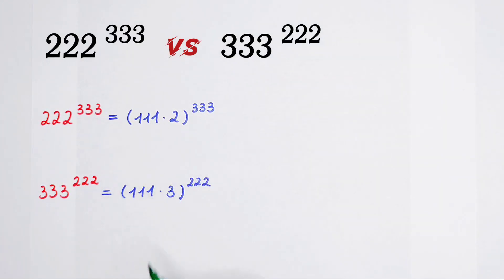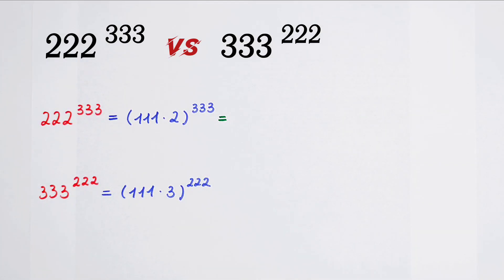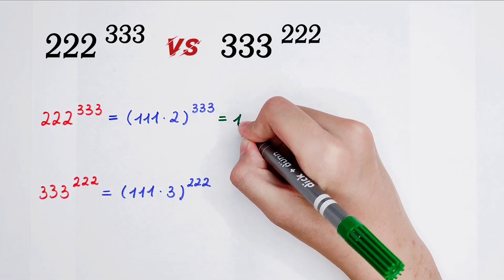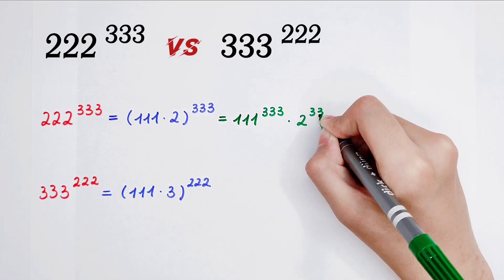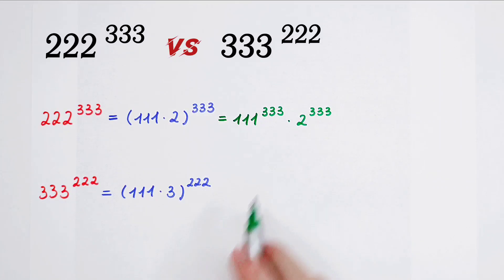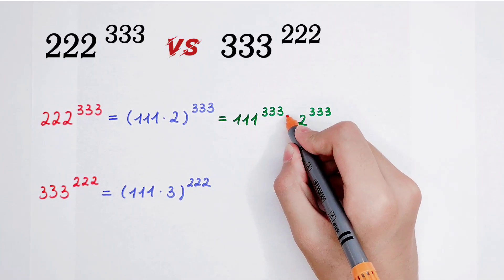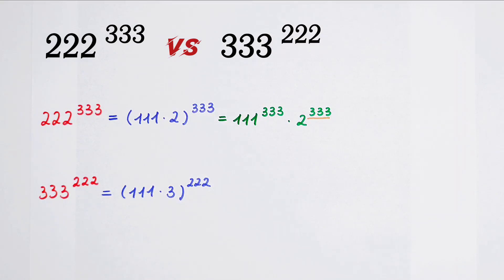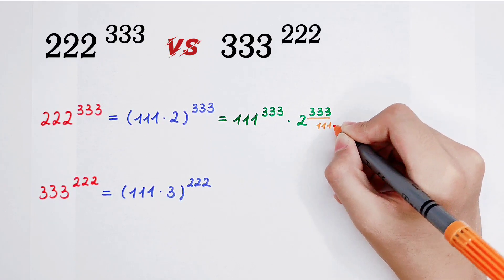Using exponent rules, since 111 and 2 have the same exponent, this can be written as 111 to the power of 333, times 2 to the power of 333. Now the exponent 333 is too large to leave on the 2, so I can rewrite it as 111 to the power of 333, times — grouping the 2 with 3 — and similarly for the other term with 111 times 3.